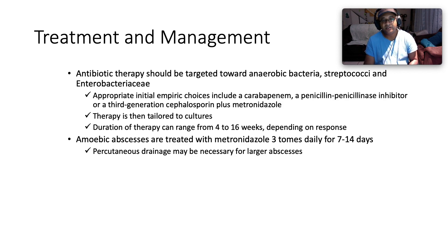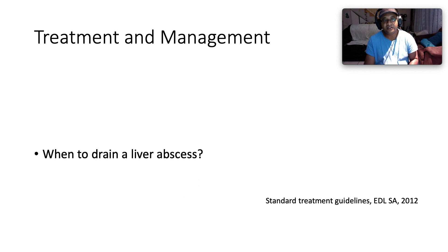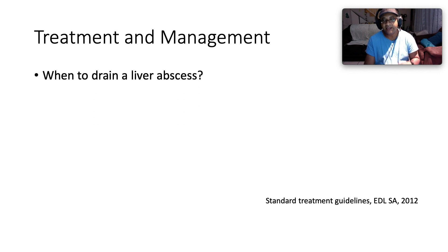Antibiotic therapy should target anaerobic bacteria, streptococci, and Enterobacteriaceae from the bowel. Appropriate empiric choices include a carbapenem, a penicillin–penicillinase inhibitor like amoxicillin-clavulanate, or a third-generation cephalosporin like ceftriaxone plus metronidazole for gram-negative and anaerobic cover. Therapy is then tailored to cultures obtained from the abscess aspirate. Duration of therapy ranges from 4 to 16 weeks depending on response. Amoebic abscesses are treated with metronidazole three times a day for 7–14 days, with percutaneous drainage reserved for larger abscesses.